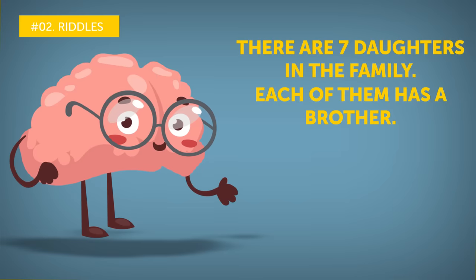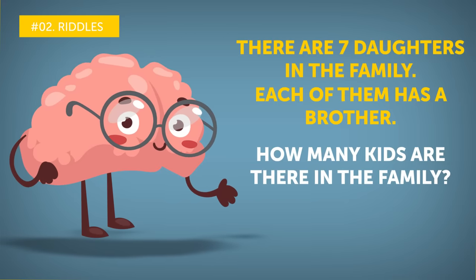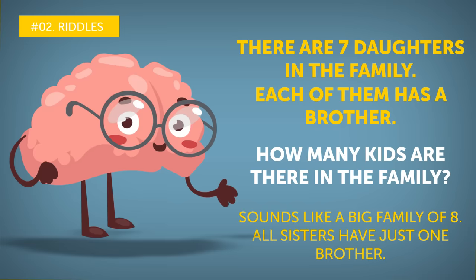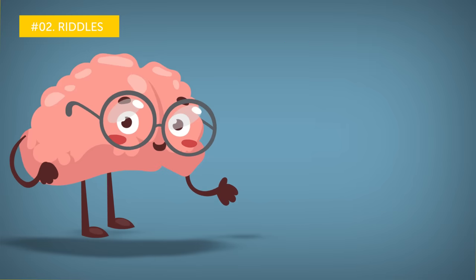There are seven daughters in the family. Each of them has a brother. How many kids are there in the family? Sounds like a big family of eight. All sisters have just one brother. Alright, enough of that.